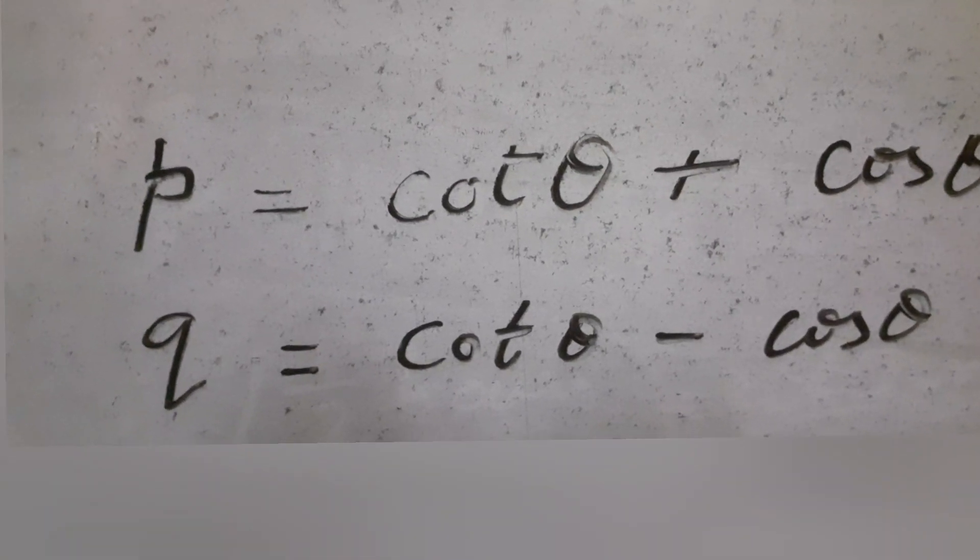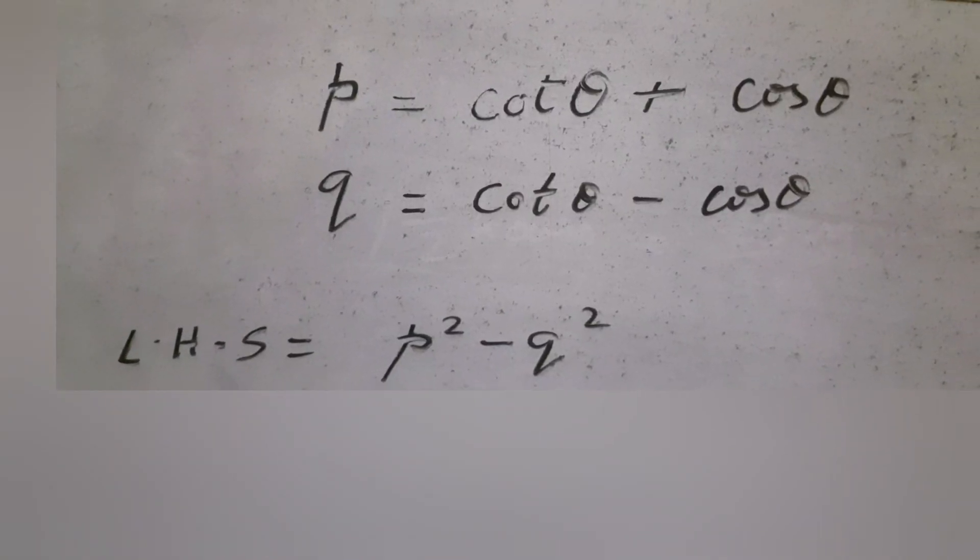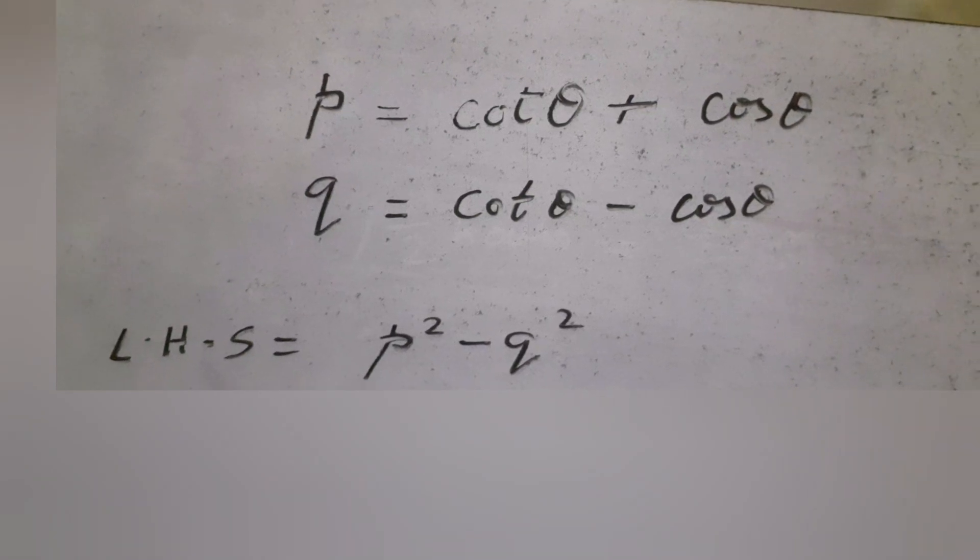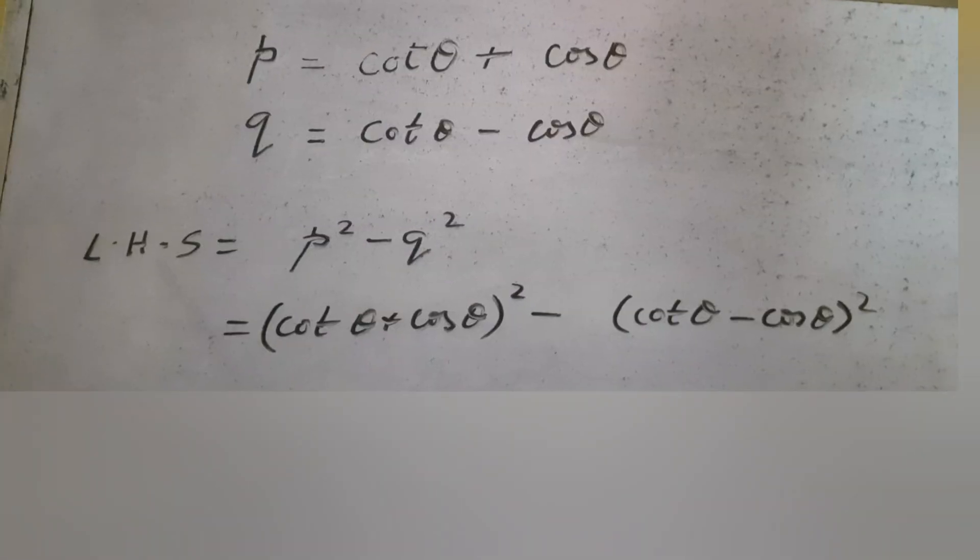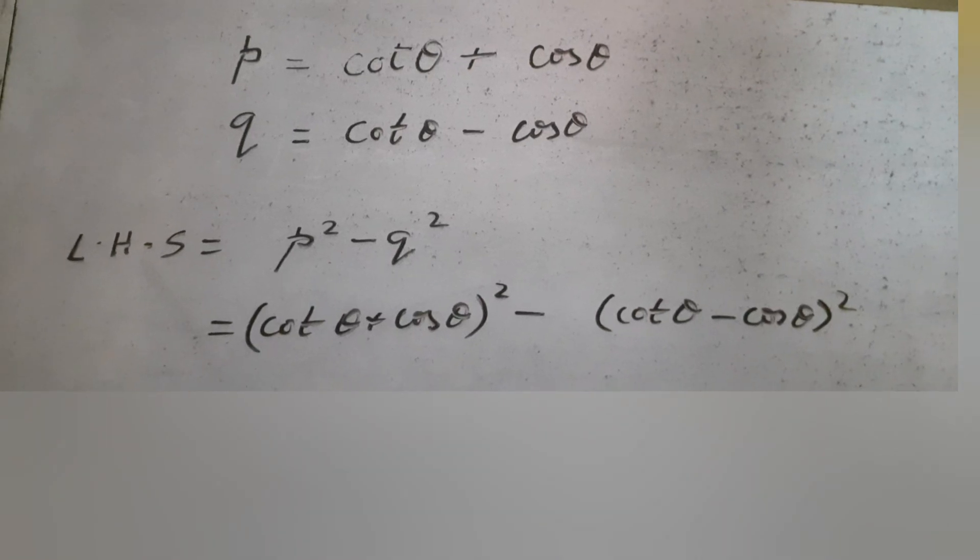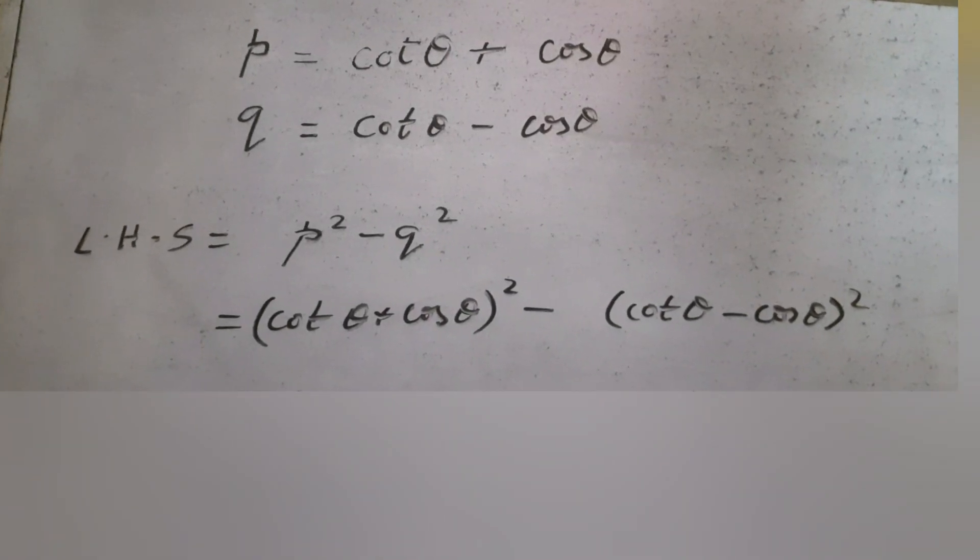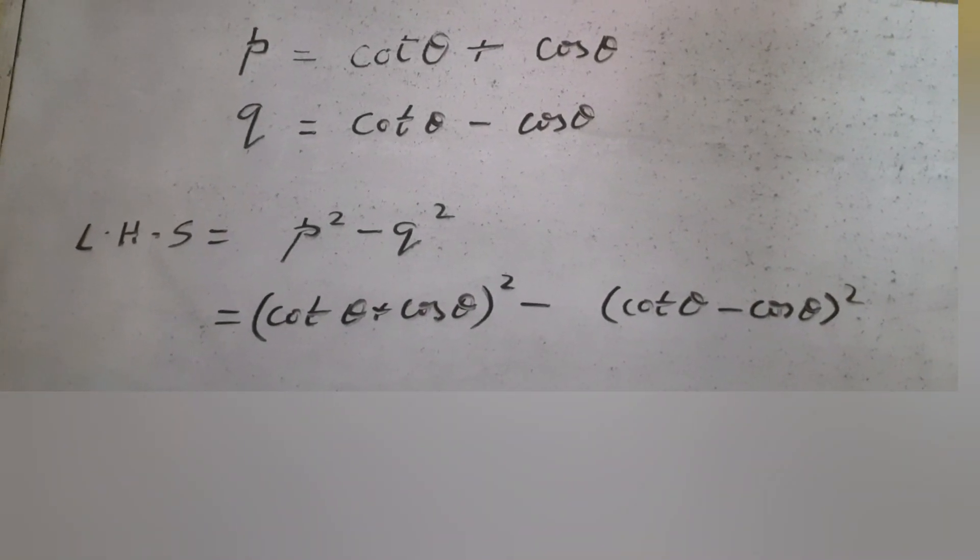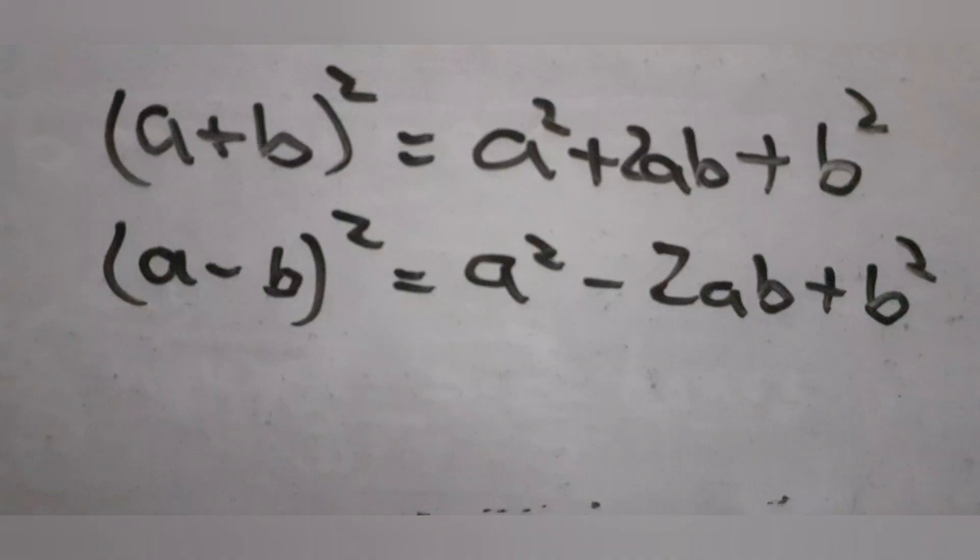Substitute the given values of p and q in the LHS: p² - q². The first term is of the form (a + b)² and the second term is of the form (a - b)², so we need to apply the identities to expand the terms.